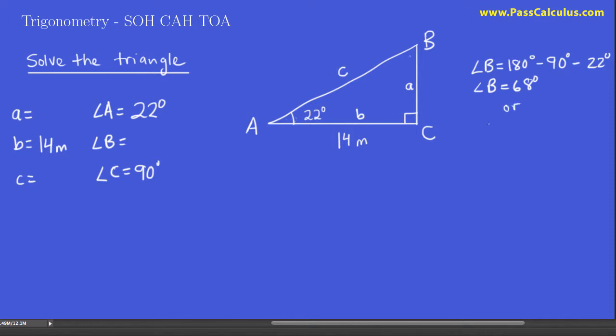So you could just, if you wanted a shortcut, you could just say angle B is 90 minus this angle, right? And of course you get the same answer, 68 degrees. Alright, so either way you do it, we come up with angle B being 68.